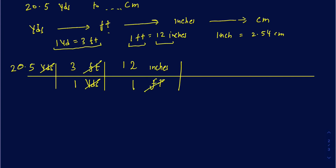Finally, convert inches to centimeters: inches goes in the denominator and centimeters goes on top. Since one inch equals 2.54 centimeters, put one with inches and 2.54 with centimeters — inches cancels out. At the end, every unit cancels except the one you're looking for: centimeters. Then do the math: 20.5 × 3 × 12 × 2.54, which gives you about 1874.5 centimeters.